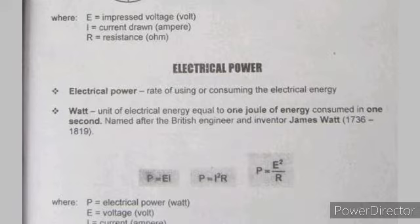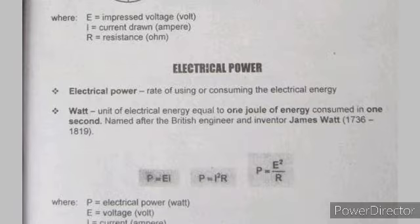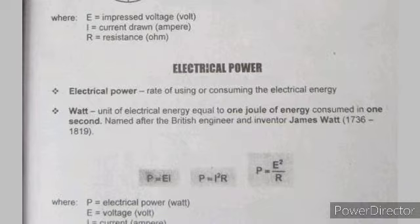Next is electric power. What is electric power? Electrical power is the rate of using or consuming electrical energy. The unit of electrical energy is equal to 1 joule of energy consumed in 1 second, named after British engineer and inventor James Watt. So 1 watt equals 1 joule per second.